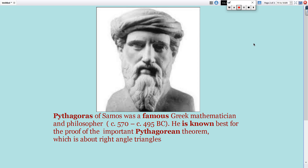Pythagoras of Samos was a famous Greek mathematician and philosopher. He is known best for the proof of the important Pythagorean Theorem, which is about right-angled triangles.